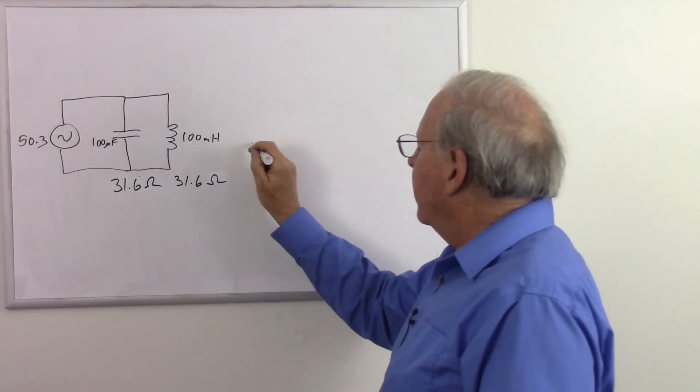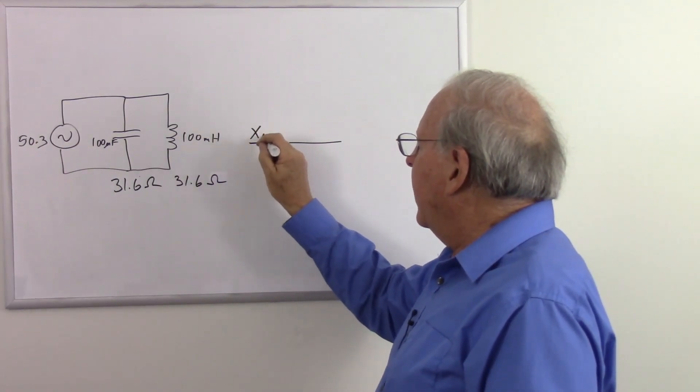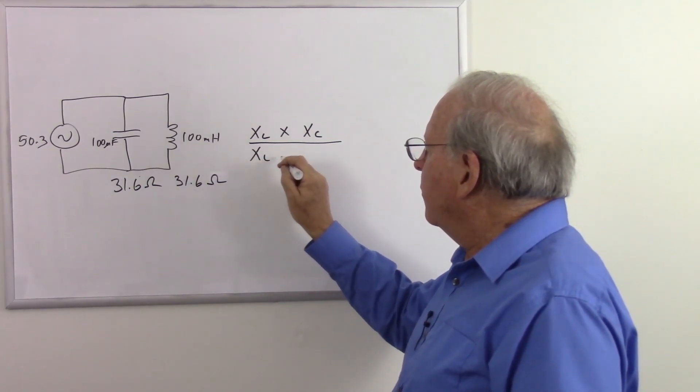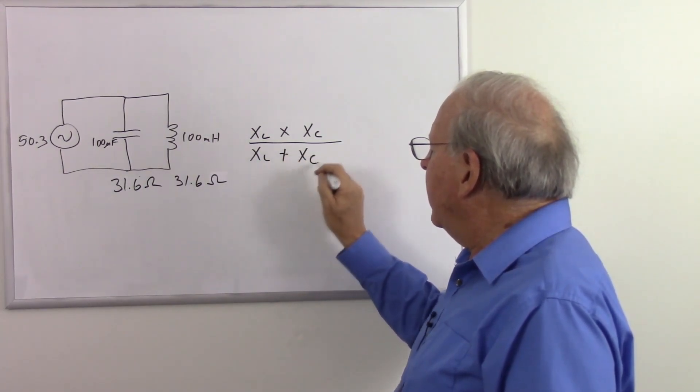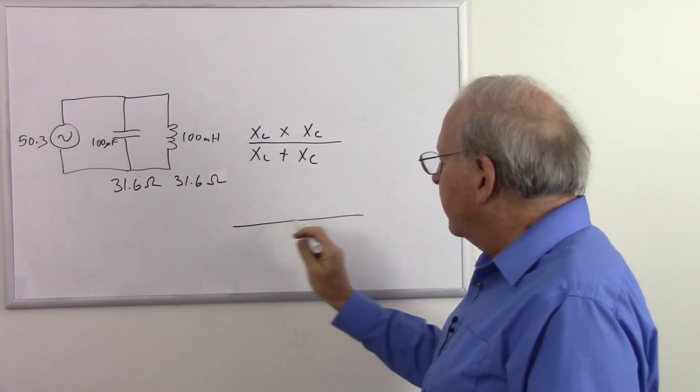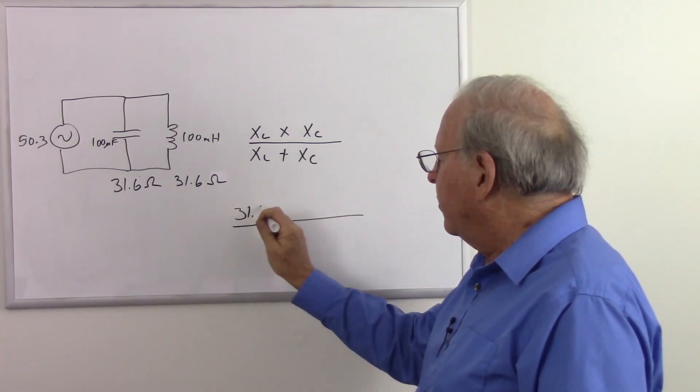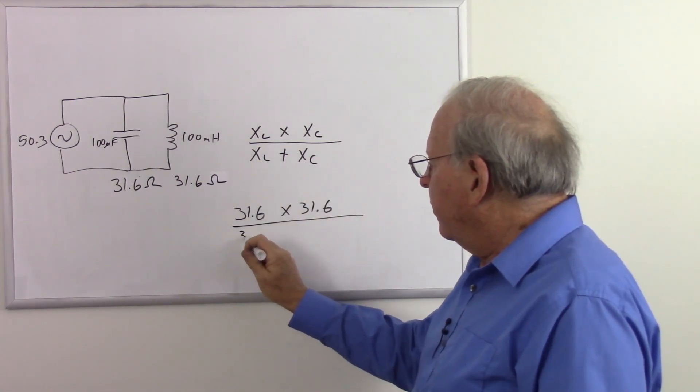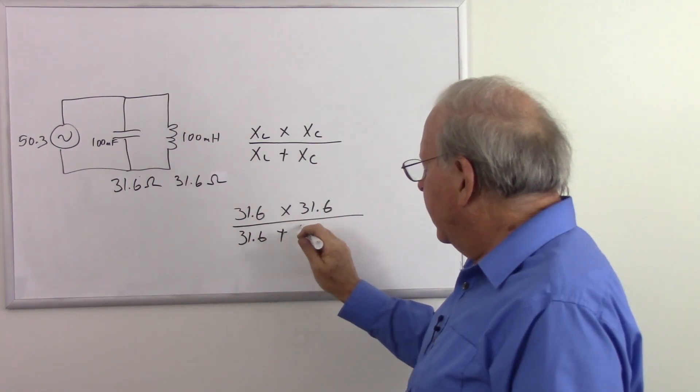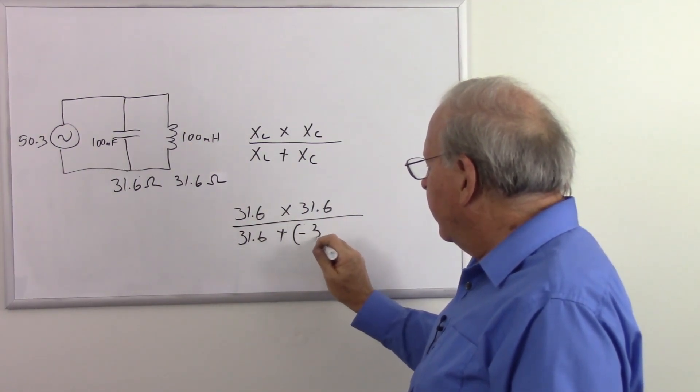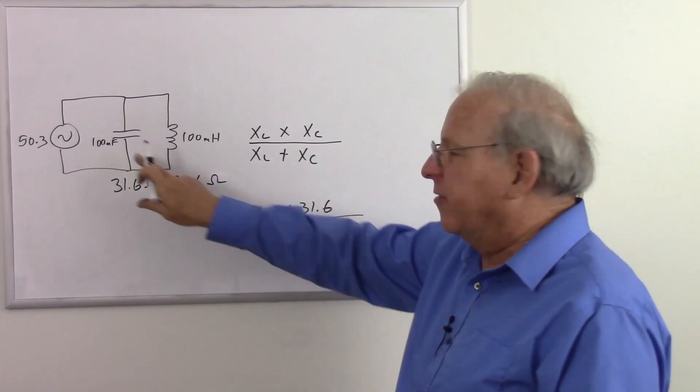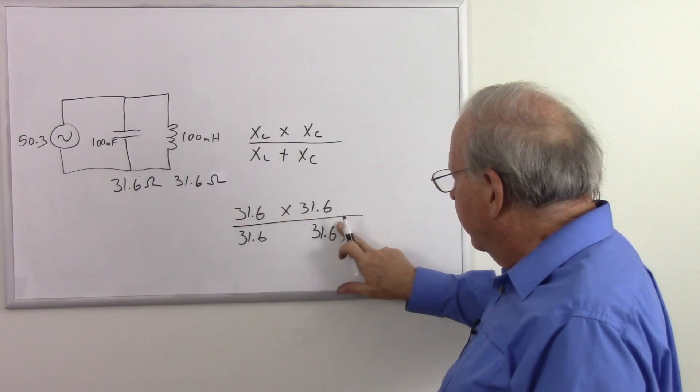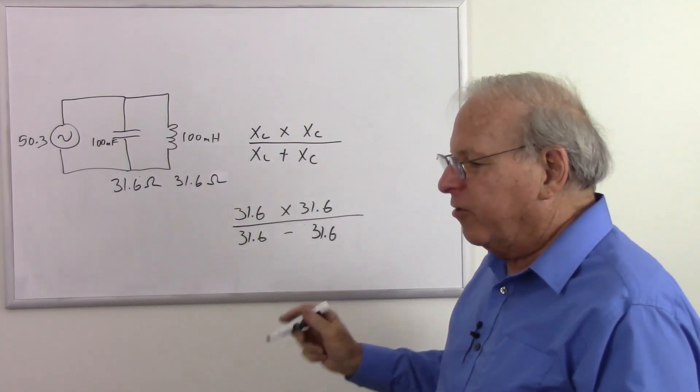So let's do the calculation. So that's going to be our XL times our XC over our XL plus our XC. Let's put the numbers in there. So that's going to be 31.6 times 31.6 over 31.6 plus negative 31.6. Remember our capacitive reactance is always negative. And we're going plus a negative number. So it's going to actually be 31.6 minus 31.6.